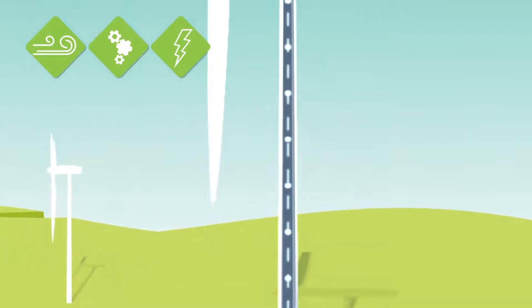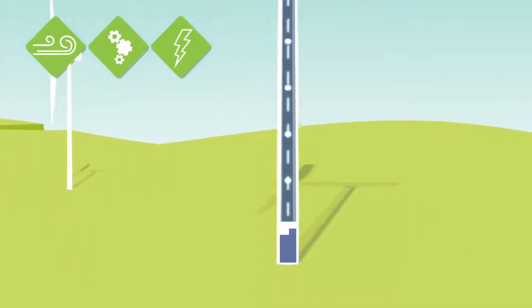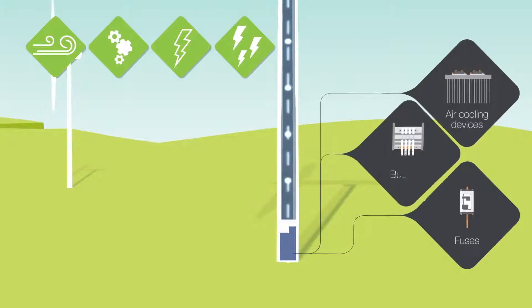The current is transmitted through the mast to a power converter and then fed into the grid. Mersen provides several key components for the power converter.